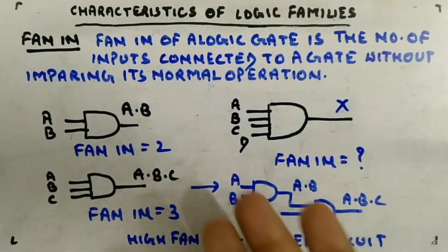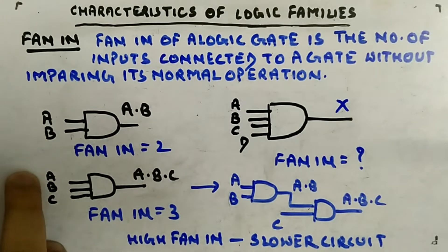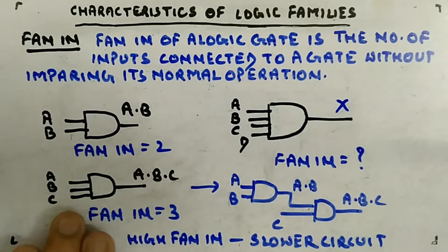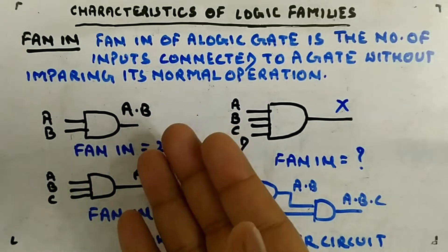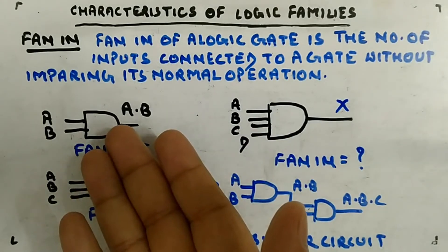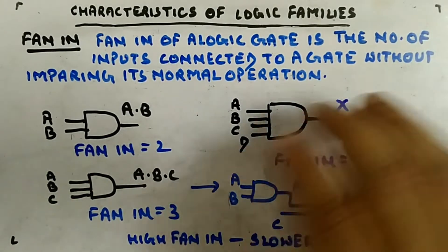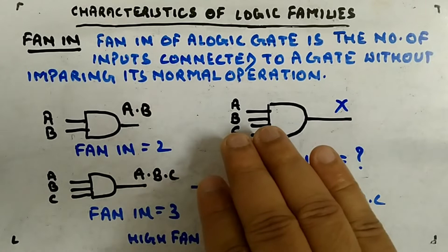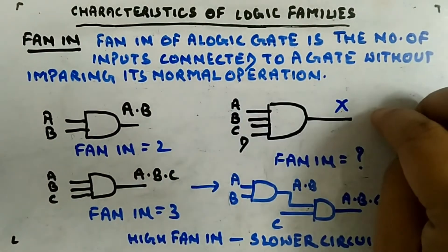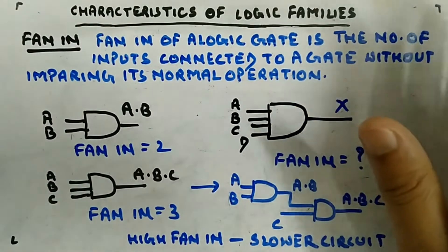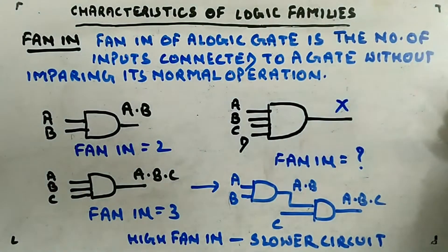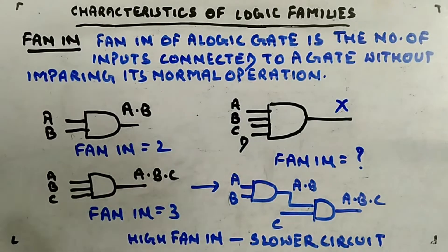You can have fewer inputs than the fan-in — for example, connect A and B normally and tie C to ground — but the maximum it can handle is three. This applies to AND gates, OR gates, NOR gates, and others. There is no specific formula to calculate fan-in; you simply look at the gate and determine how many inputs it can handle.